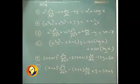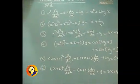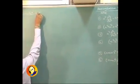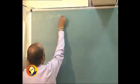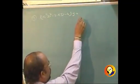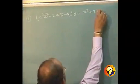I am just writing the problem using capital D operator: x²D² - 2xD - 4 operating on y is equal to x² + 2log x.